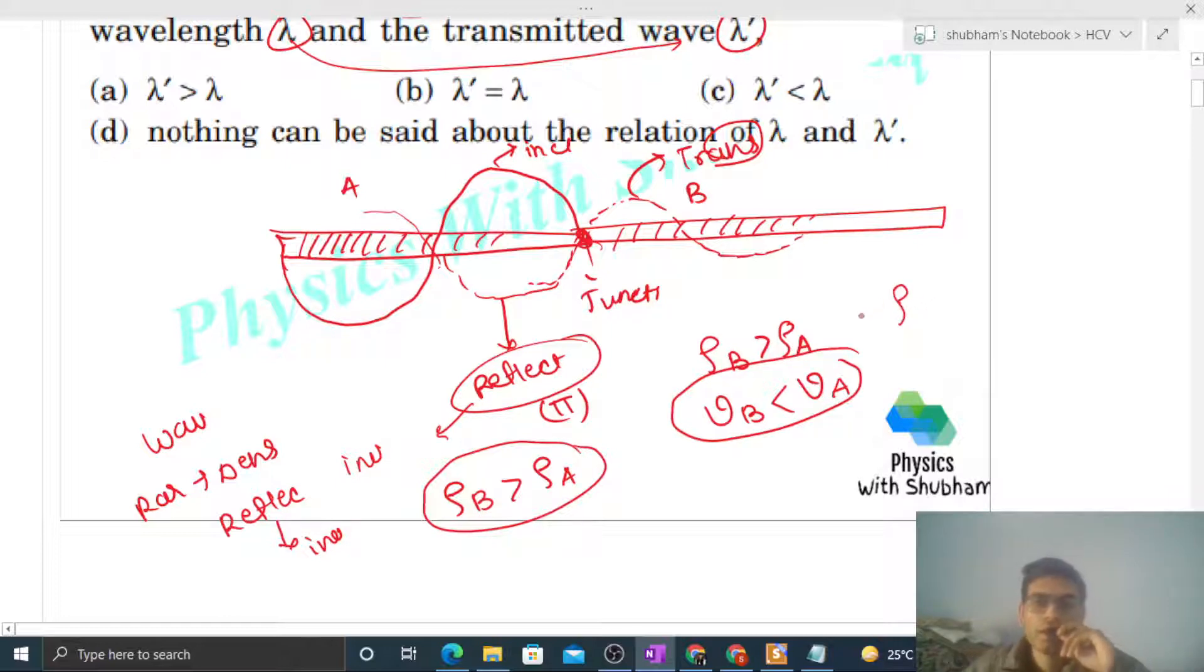So what is given? Wavelength aapko deh rakha hai. Medium A mein jo wavelength hai, that is lambda. And medium B mein jo wavelength hai, that is lambda dash, because transmitted wave hai na medium B mein. That's why vaha pe jo wavelength hai, that is lambda dash. And incident wave kaha pe hai na, medium A mein. So vaha pe jo wavelength hai, that is lambda. And speed ko hum wavelength and frequency ke terms mein bhi likh sakte hai.